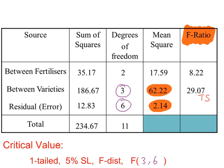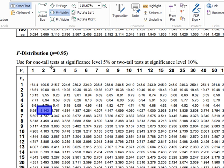And then doing something similar for the varieties, our second factor. So dividing these two, 62.22 divided by 2.14, 29.07. This is our test value. And then to get the critical value for this test, it's F 3 6 in that order. Again, going to the tables, F 3 6, 4.757.